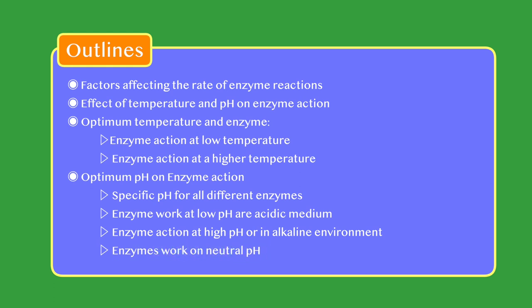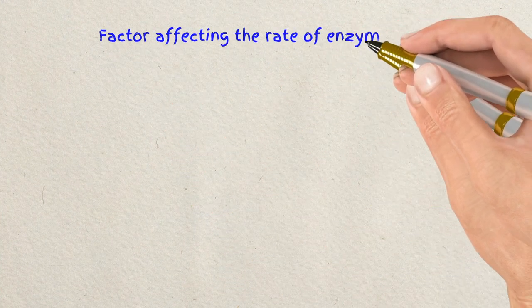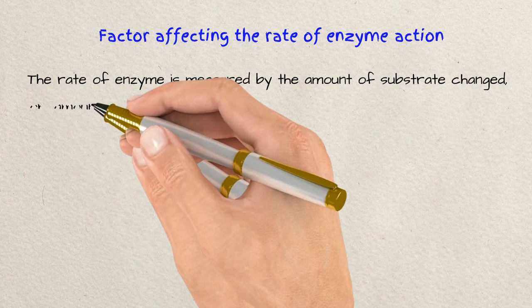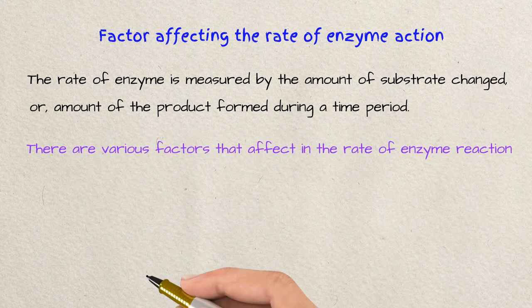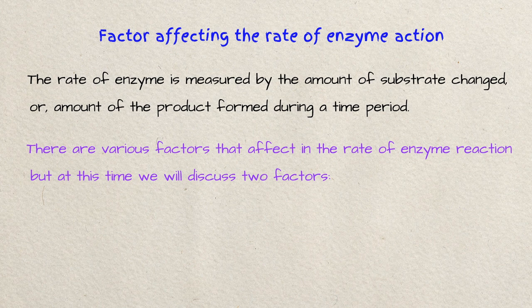When we say that we are working on enzymes, the metabolic reaction is sped up. There are some factors that can affect the enzyme on its own activity. The rate of enzyme reaction is measured by the amount of substrate changed or amount of product formed during a period of time. There are various factors that affect the rate of enzyme reactions.